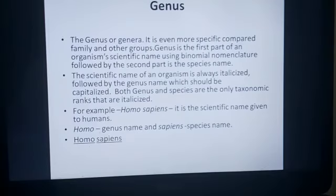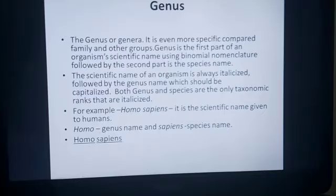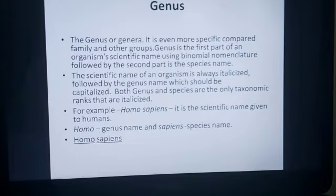Next comes genus. The genus, or genera, is even more specific compared to family or other groups. Genus is the first part of an organism's scientific name using binomial nomenclature, and the second part is the name of the species. The scientific name of an organism is always italicized, with the genus name written in capital letters.